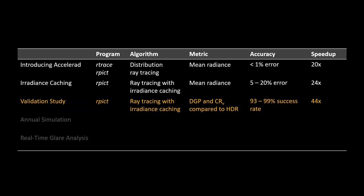Using ray tracing with irradiance caching, I've been able to achieve accurate predictions of glare with 93–99% accuracy depending on method, and a speedup of up to 44 times. But that gives results for a few days of data—what if I'm interested in an entire year?